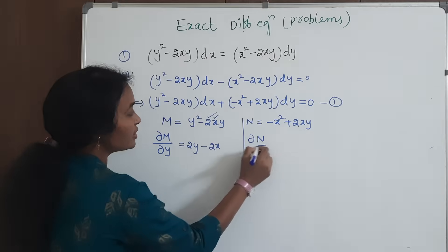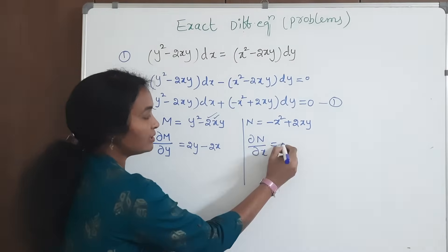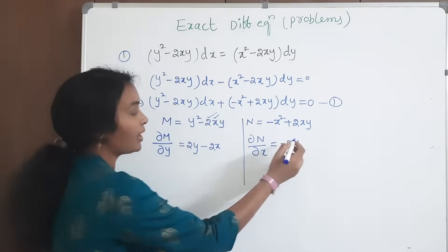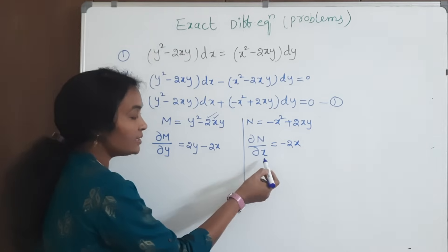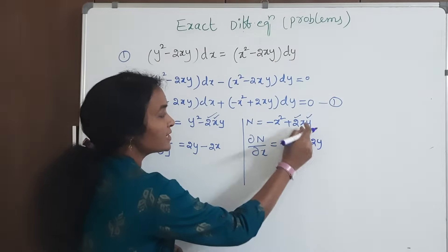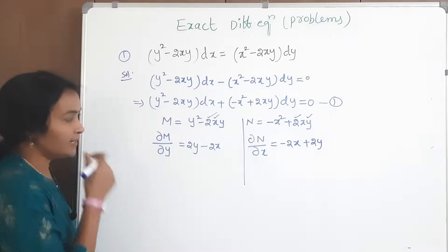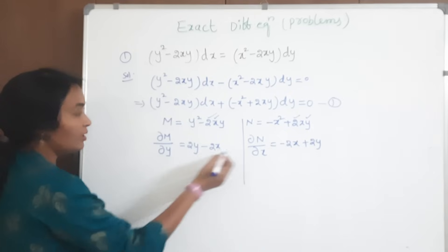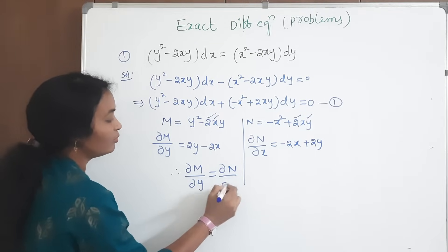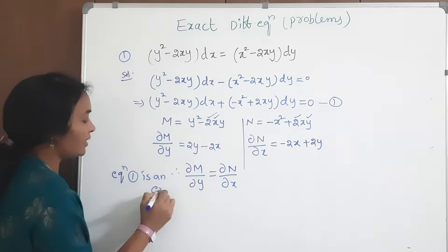Next, differentiate N with respect to x. N is minus x² plus 2xy. Differentiating minus x² gives minus 2x. For 2xy, y is constant so differentiating with respect to x gives 2y. Therefore ∂N/∂x = 2y minus 2x. Observe these two results — they are the same. Therefore, this is an exact differential equation.